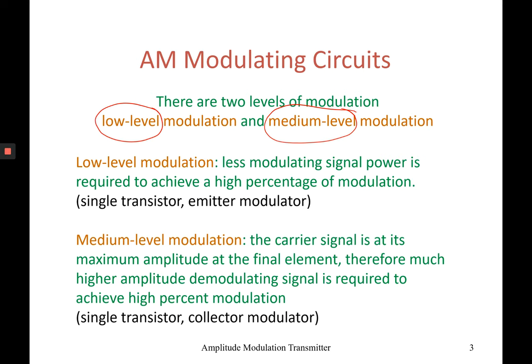For low level modulation, less modulating signal power is required to achieve a high percentage of modulation. For this low level modulation circuit, it will use a single transistor where the modulator will be connected to the emitter of the transistor.